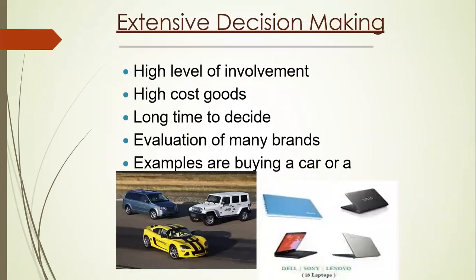In extensive decision making, a high level of involvement is there from the consumer side. High cost goods are involved — when we are purchasing high cost goods, extensive decision making comes in. It takes a long time to decide because the cost is high. We evaluate many brands, for example: car, laptops, or AC.